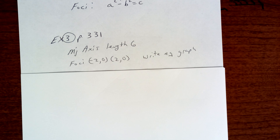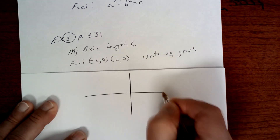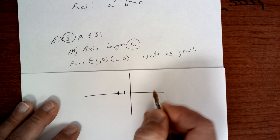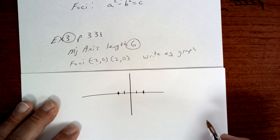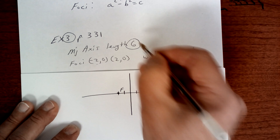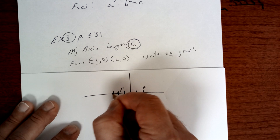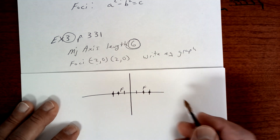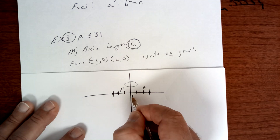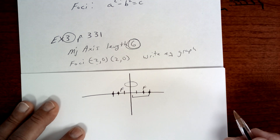Let's take a look at one. Copy this down. This one says write an equation of this ellipse. I would draw a graph. The length of the major axis is 6, and the foci are at negative 2, 0 and 2, 0. So your major axis is on the X axis. You're going to take half of 6, go 3 this way and 3 this way. Now what you need to do is find your minor axis. This is 3 from here to here, so A equals 3.